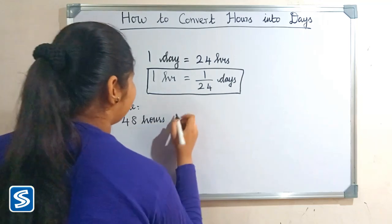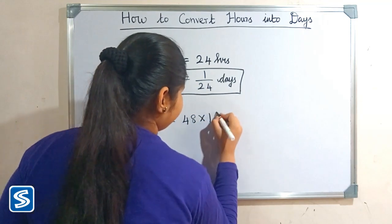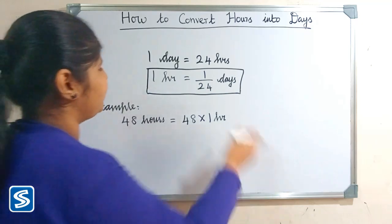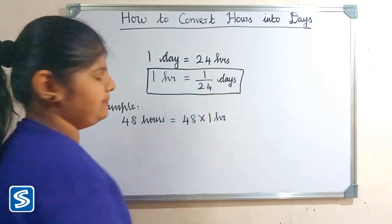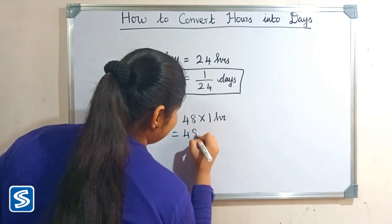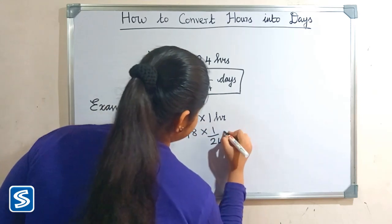So 48 hours can be written as 48 multiply one hour. So now we have to substitute one by 24 days in the place of one hour. So 48 multiply one by 24 days.